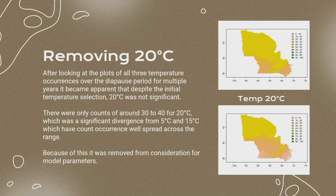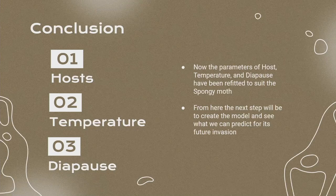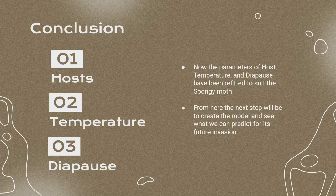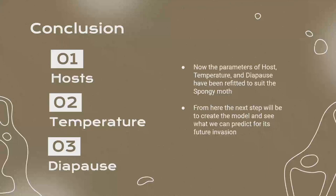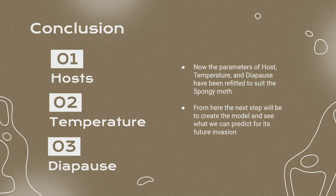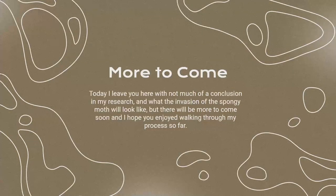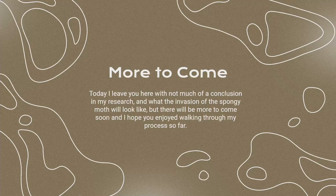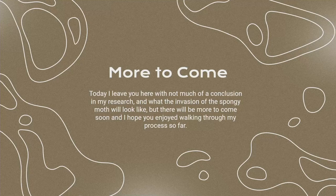All my parameters — host, temperature, and diapause — have been refitted and suited to the spongy moth and are ready to model. Other parameters are fairly easy to discern from the geographic space. The next step will be to create the model and see what we can predict for its future invasion. I leave you here without a conclusion or full picture of the spongy moth invasion yet, but more to come soon. I really enjoyed walking through my process and I hope you enjoyed it. Thank you.